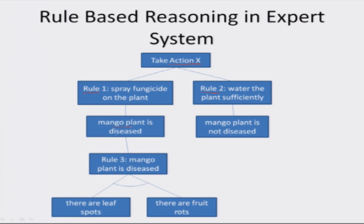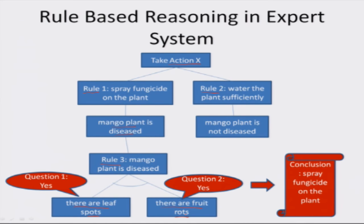Suppose initially Rule 1 is triggered. The expert system checks whether its condition is true or not — its condition is 'mango plant is diseased.' The expert system sees that this is the conclusion of Rule 3, so it triggers Rule 3 and checks whether its conditions are true: 'there are leaf spots' and 'there are fruit rots.' The expert system asks these two questions to the user. If the user answers yes to both, the expert system concludes to spray fungicide on the plant. This is how the expert system does reasoning.